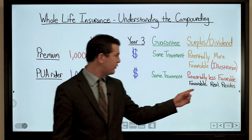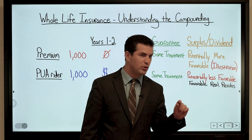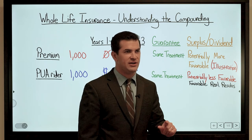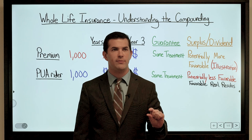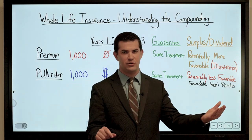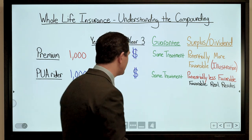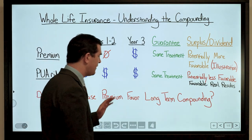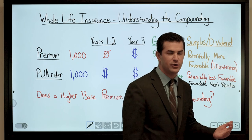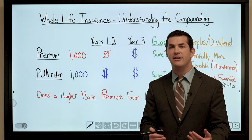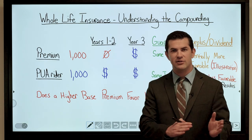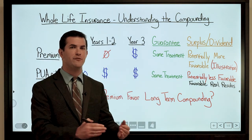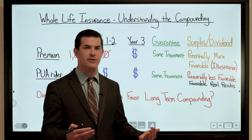You still receive surplus and dividends on PUA dollars, but potentially less favorably than on base premium dollars. However — and this is interesting — when we look at policies that are 10 or 20 years old that corporations have used forever, we actually see that the lower the base premium, the higher the actual results. Not projections or illustrations — real data. So the question is: does a higher base premium favor long-term compounding within a cash value life insurance policy?